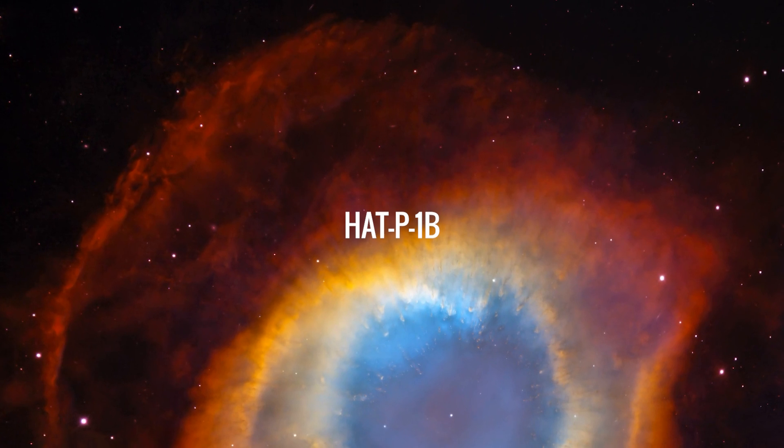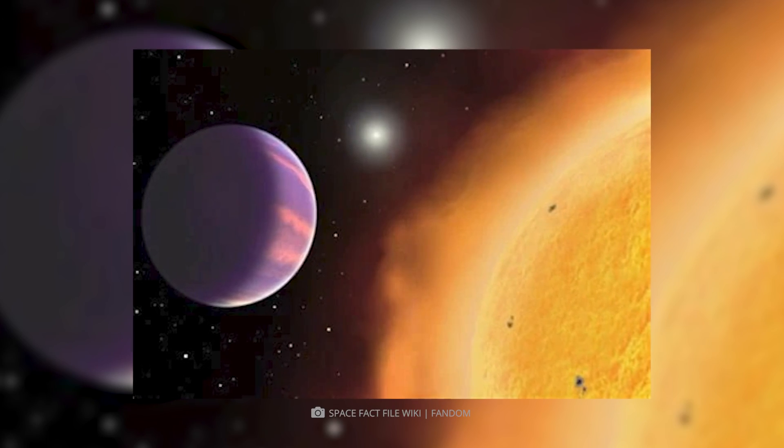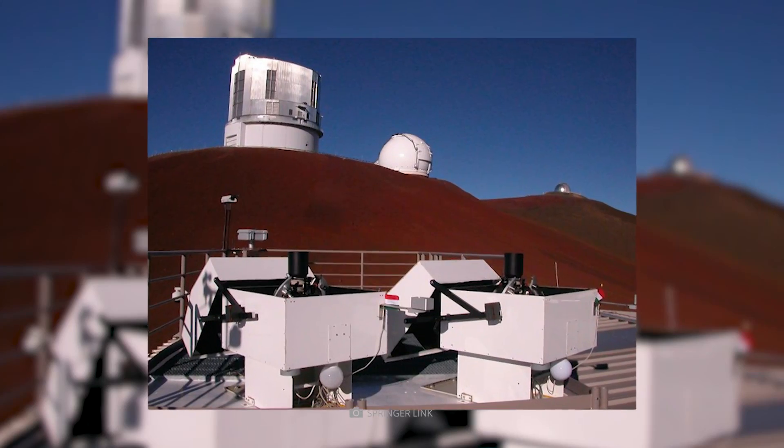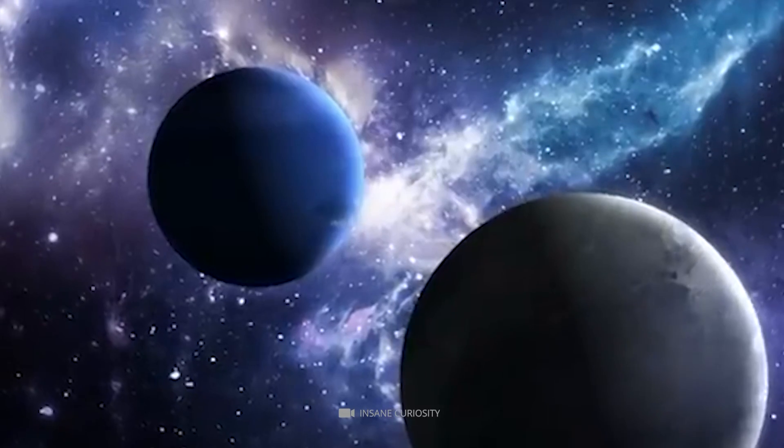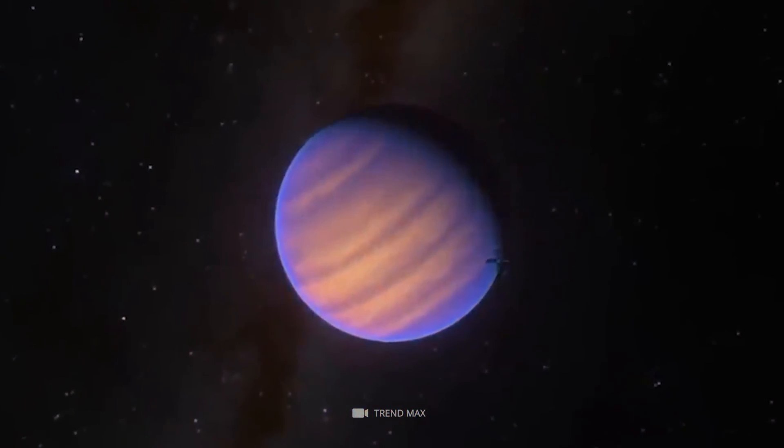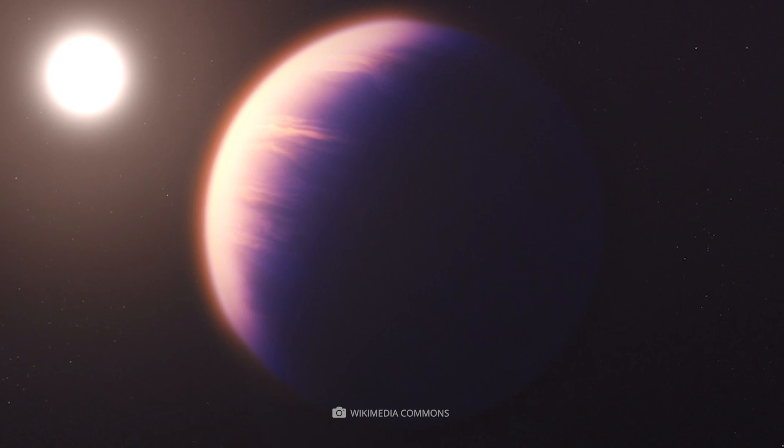HAT P1B is a large planet located roughly 521 light-years away from Earth in the constellation Lacerda. It was discovered on September 14, 2006, by the HATnet Project. HAT P1B has an impressive radius of 94,298 kilometers. Due to its proximity to its parent star and subsequent high temperatures, HAT P1B is not habitable for life as we know it.